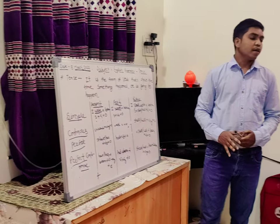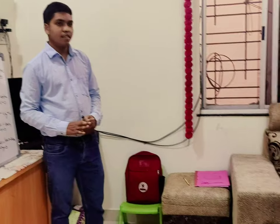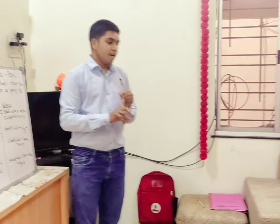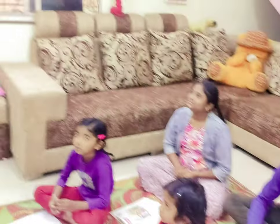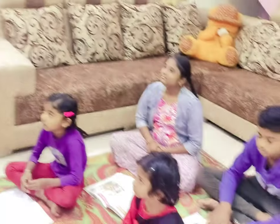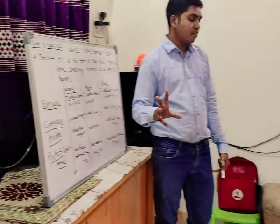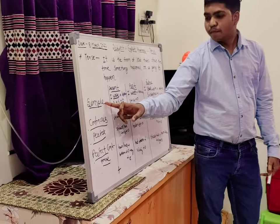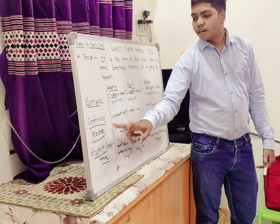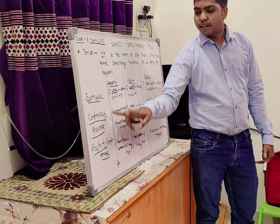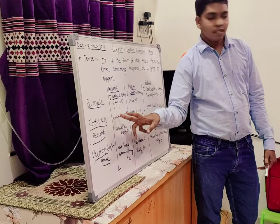So basically tense has three types: simple present tense, present continuous tense, and future tense. Tense also has four parts: simple present tense, present continuous tense, perfect tense, and continuous tense.